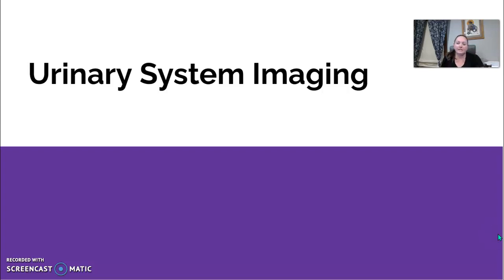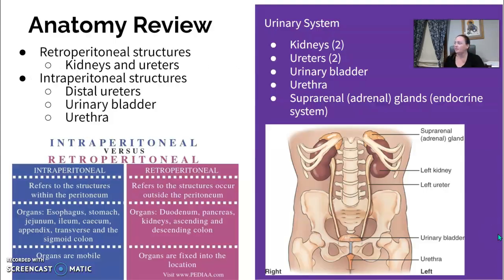Starting off with urinary system imaging today. Let's start with a quick anatomy review of the urinary system. We have two kidneys, two ureters, a urinary bladder, a urethra, and the adrenal glands would also be included here.